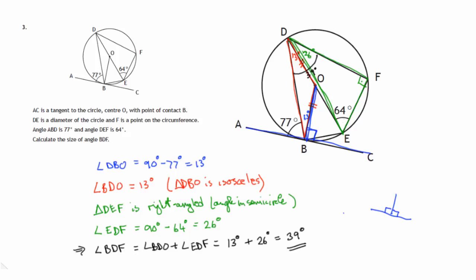So there were three parts to that: first, the tangent at right angles to the radius; then the isosceles triangle; and then the right-angled triangle using the angle in a semicircle — and that got us to the final answer of 39 degrees.